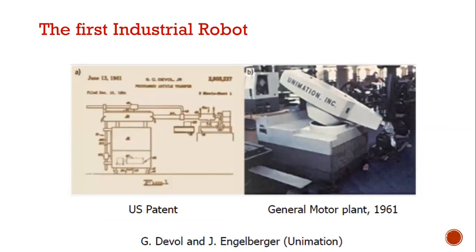The first industrial robot was developed at a General Motors plant in the year 1961 and was also patented by a US patent. It had a heavy construction with manipulators where linkages could move and perform tasks. It was the first industrial robot.